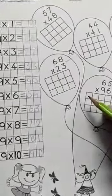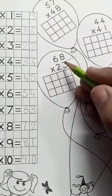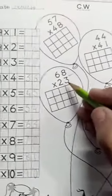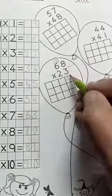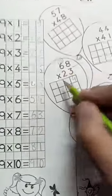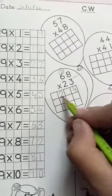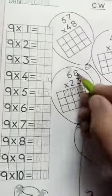We will start. 3 eights are 24. 24 will be 4, 2 will be carried out. 3 sixes are 18. 2 plus 18 is 20.